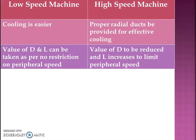Then, regarding peripheral speed: in a low speed machine, there is no special restriction on peripheral speed, so the values of d and l can be chosen as needed. While in a high speed machine, peripheral speed is very important and must be limited within a permissible value. Therefore, the diameter d must be reduced and the length l should be increased to limit the peripheral speed.